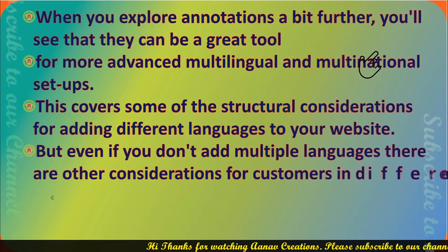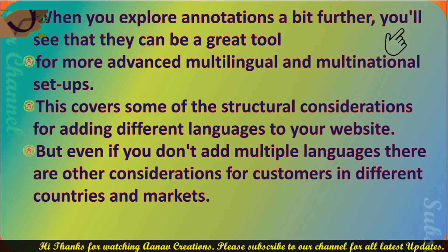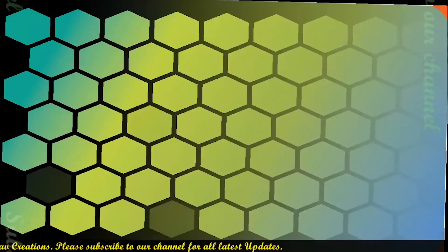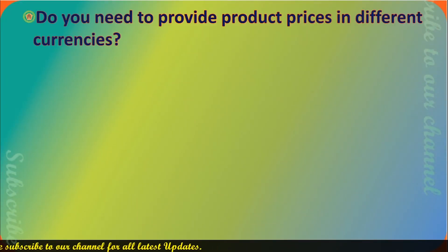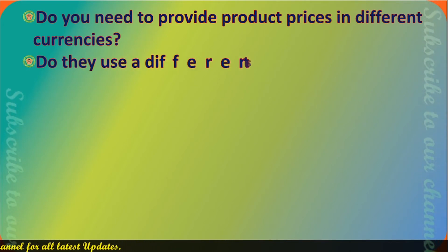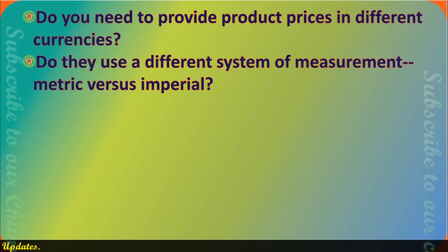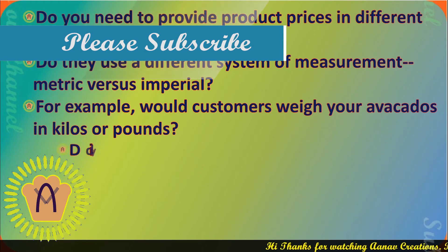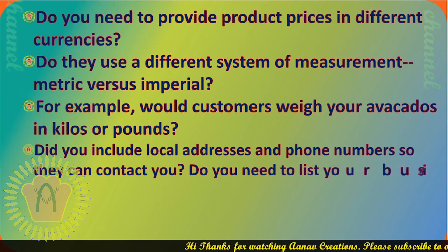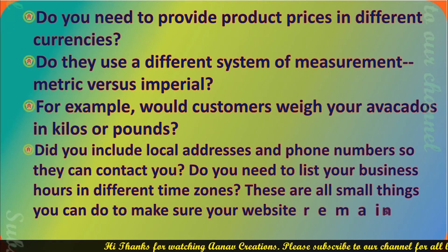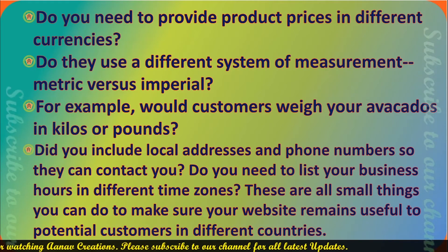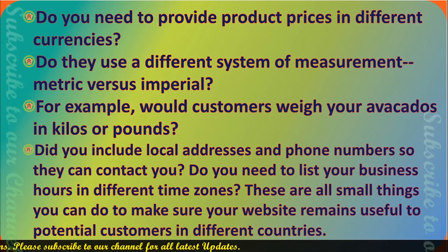But even if you don't add multiple languages, there are other considerations for customers in different countries and markets. Think about what information would be useful for them: do you need to provide product prices in different currencies? Do they use a different system of measurements — metric vs. imperial? For example, would customers weigh your avocados in kilos or pounds? Did you include local addresses and phone numbers so they can contact you? Do you need to list your business hours in different time zones? These are all small things you can do to make your website useful to potential customers in different countries.